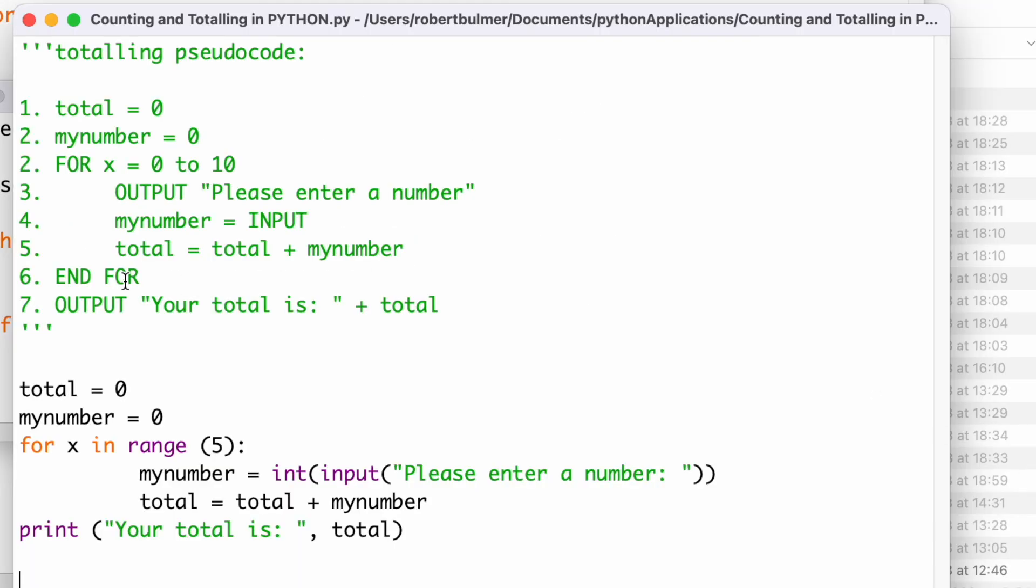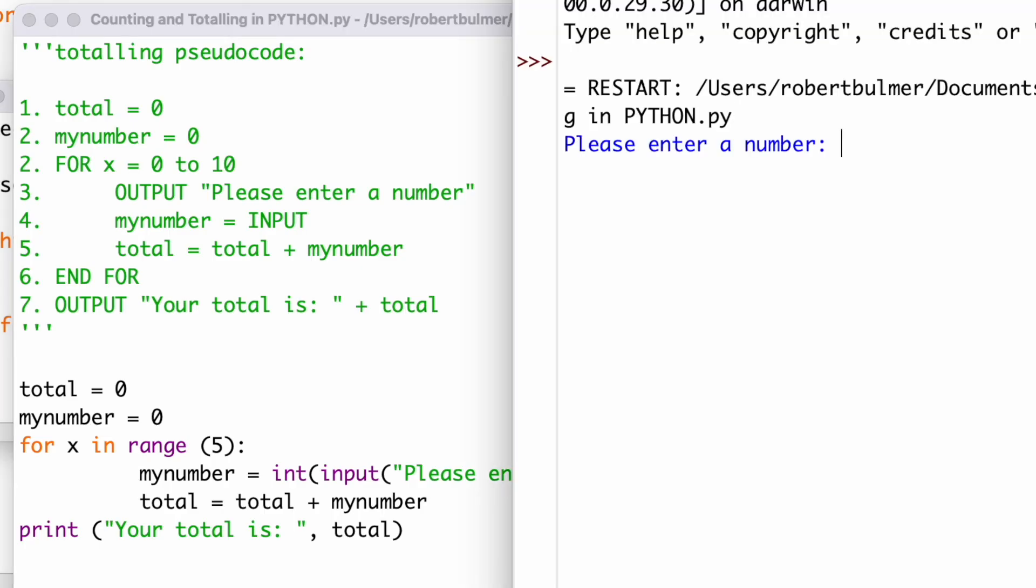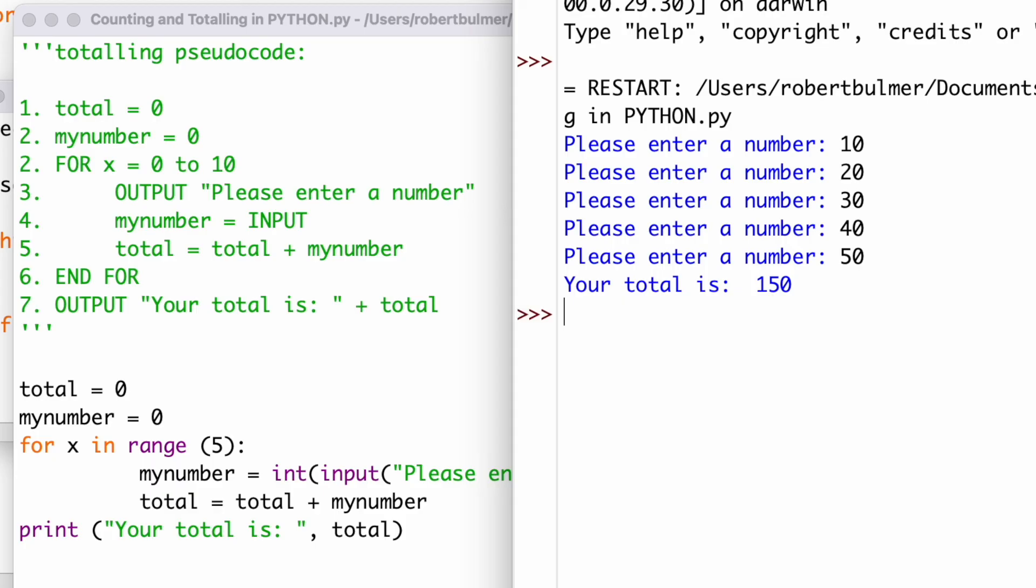Moving on to totaling. Total equals zero, number equals one, we're going to do this five times, so we're going to enter please enter number five times and we're going to add all these numbers together. Let's have a look how this works. Run this program. Please enter number 10, 20, 30, 40, 50 and the total is 150 because it's added all of these numbers together. That is an example of counting and an example of totaling.